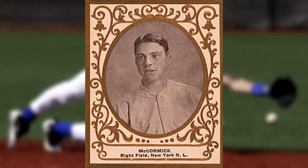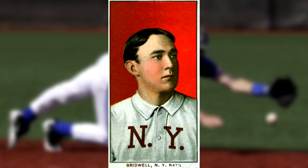Al Bridwell struck a single scoring McCormick and apparently winning the game. The spectators ran into the field assuming the game was won by their Giants, which was an acceptable practice back then. Meanwhile, Merkel, who was supposed to make a run for second base, instead ran to the clubhouse to evade the mob of spectators.